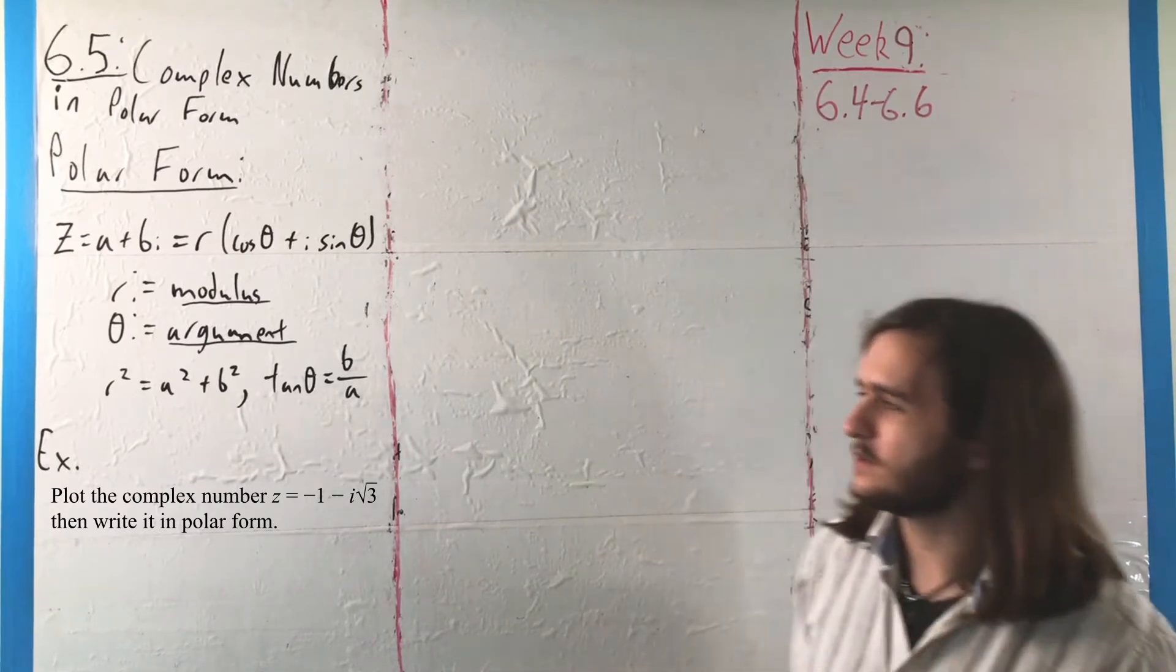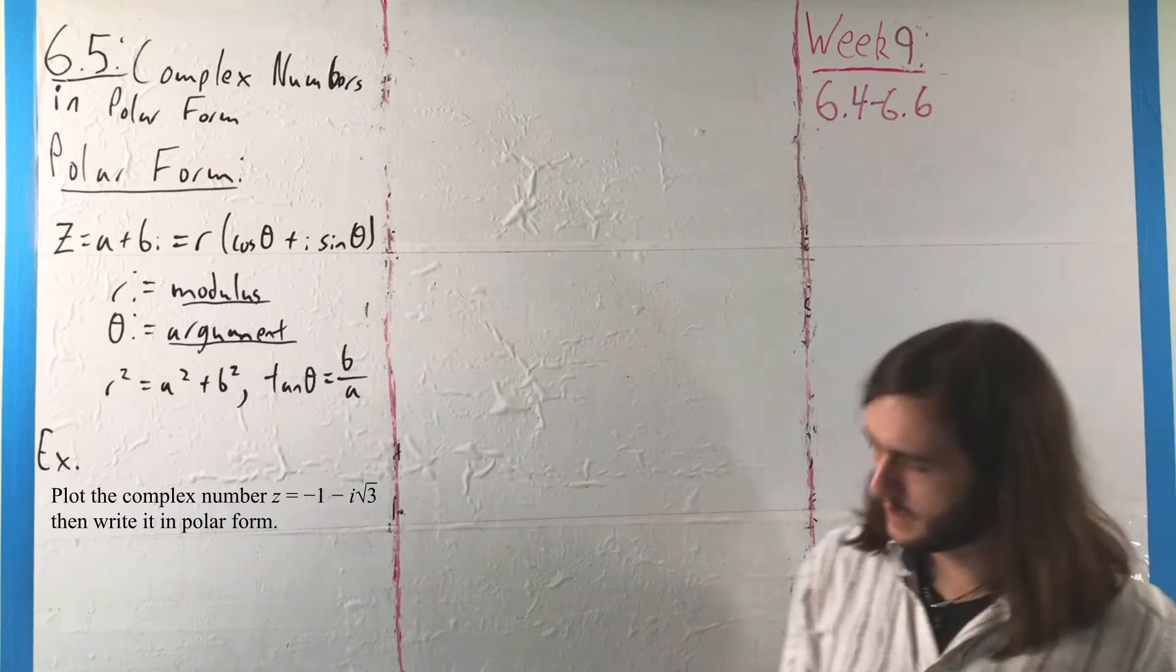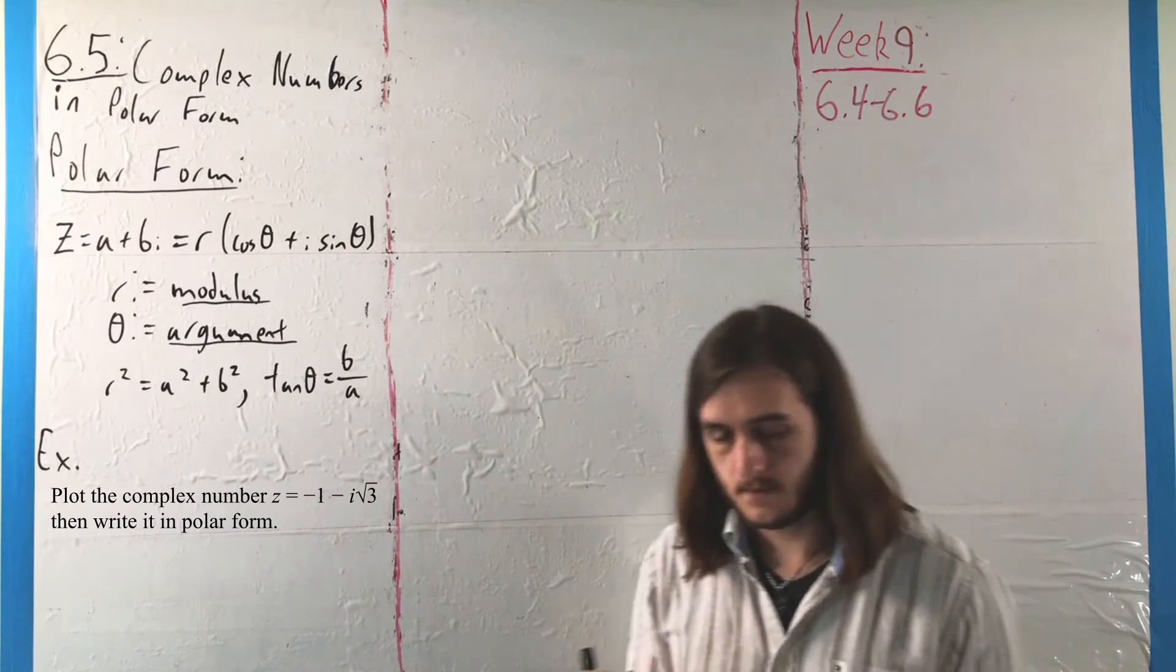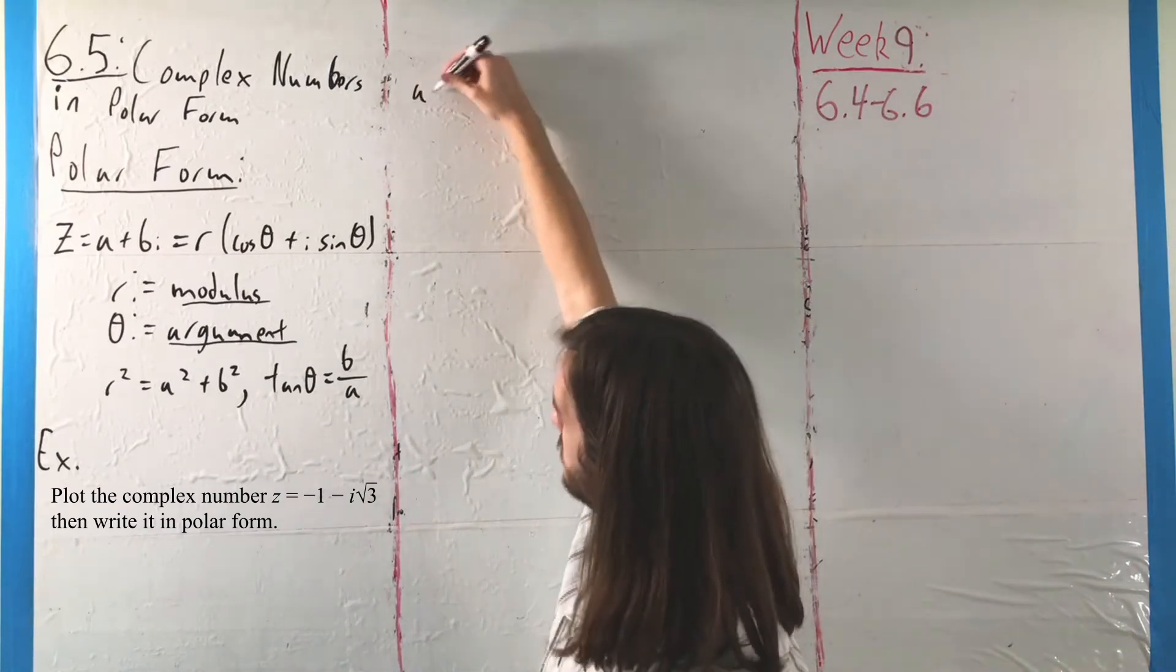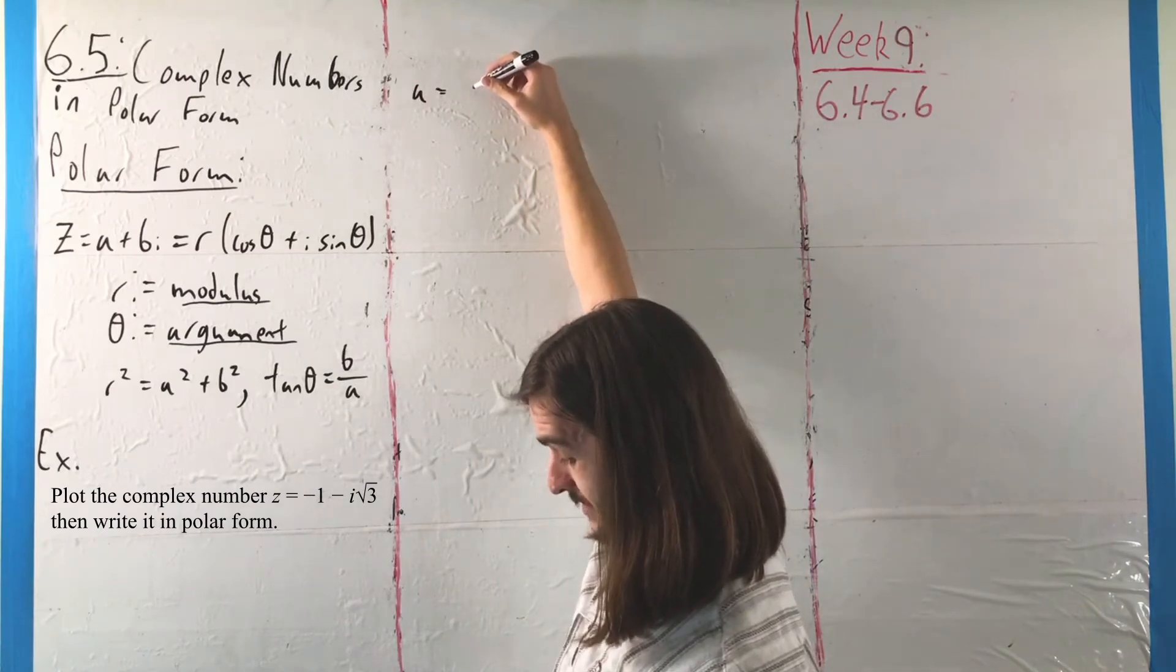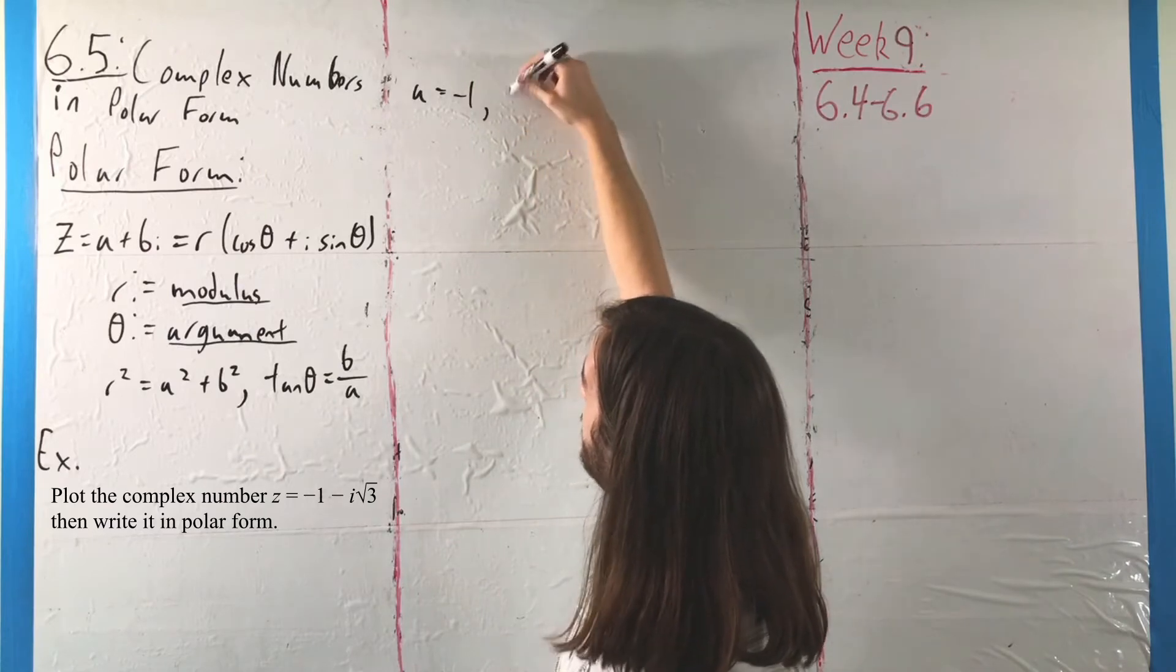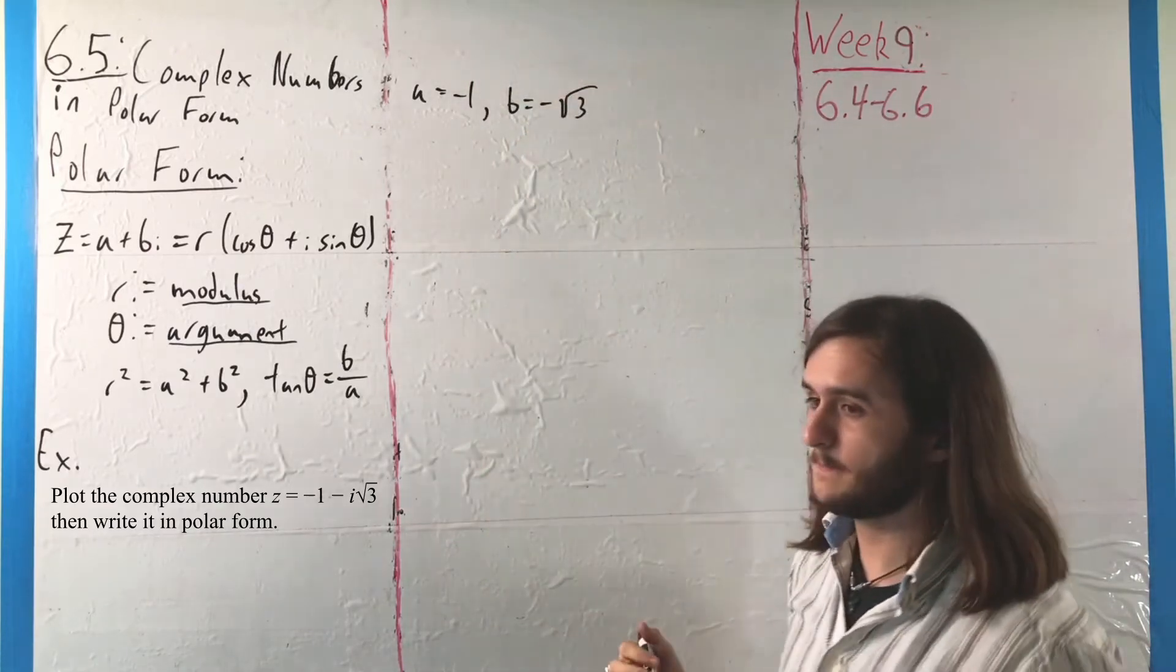We're not going to put it in that order to avoid ambiguity. We have a = -1 and b = -√3.